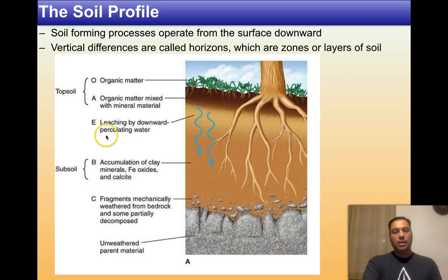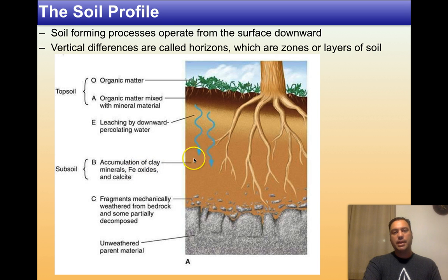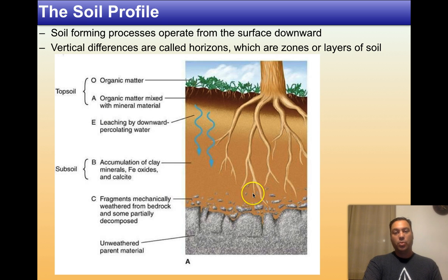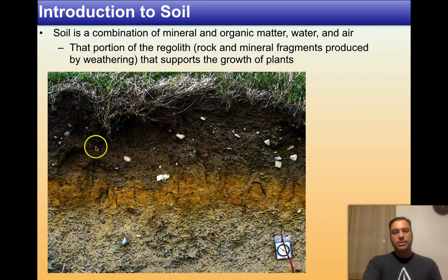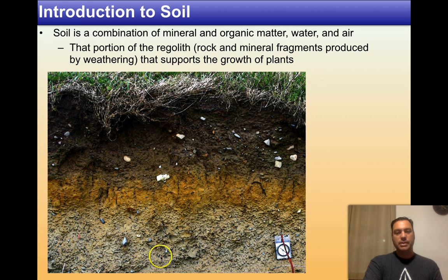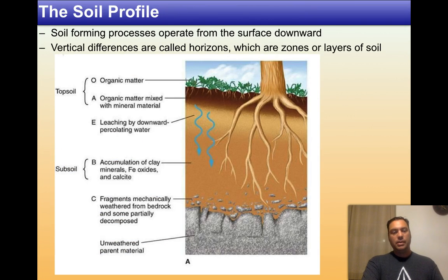Sitting below the E horizon is the subsoil. Everything below the light-colored E horizon section is the subsoil, where a lot of the clay minerals, iron oxides, and calcite are washed down lower. This is basically where the rock is being broken up over time — roots help break up the unweathered parent material. Below the E horizon is the B horizon, the zone of accumulation. Below that is the C horizon — the material right on top of the bedrock breaking up — and then the bedrock itself.